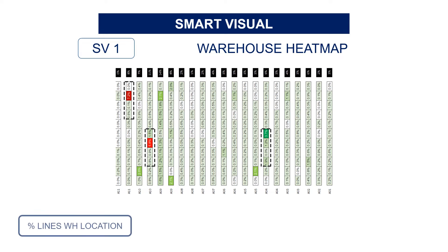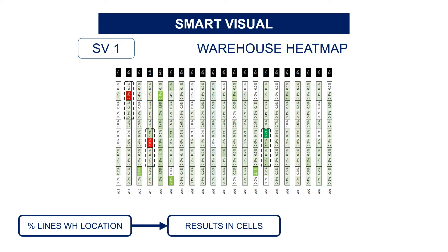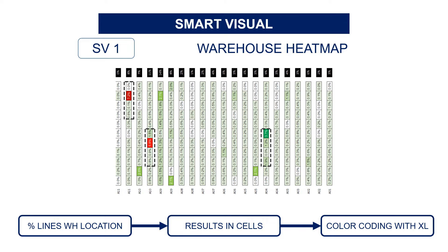How can you build it? Start by mapping the picking locations of your warehouse by linking them with their respective SKU or SKUs. Then group them by location to sum the number of lines and calculate the percentage. Then create an Excel — I'm sorry for those who expected a fancy Python library, but Excel is the most efficient here. Draw the cells and link the values with the table created before. And finally, you can use a simple color coding to spot the zone with the highest percentage. Et voilà, you have your heatmap.